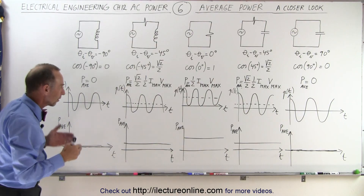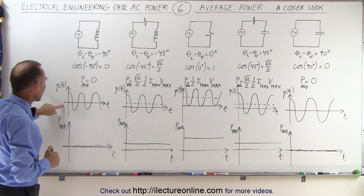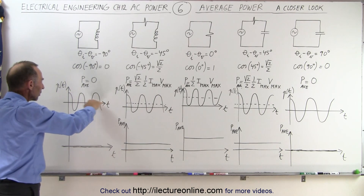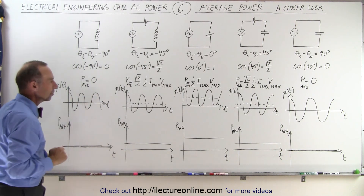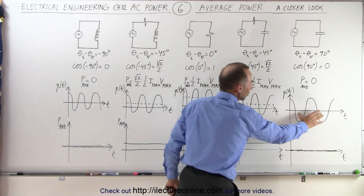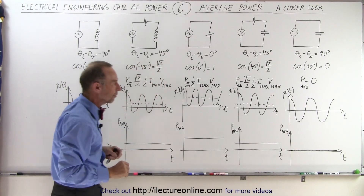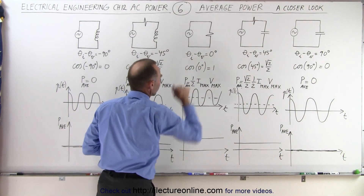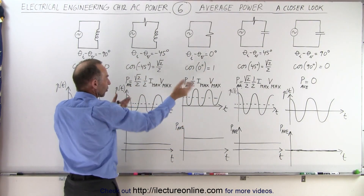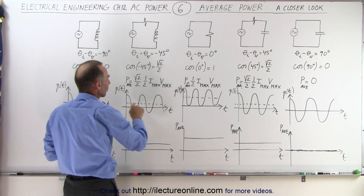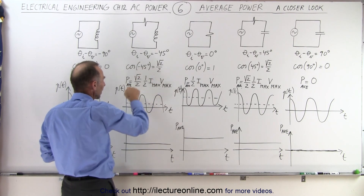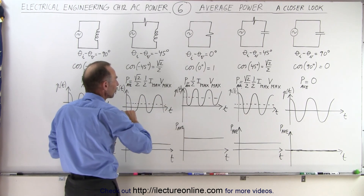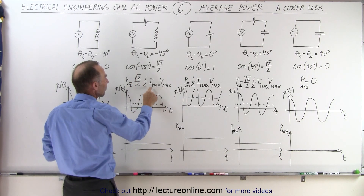Now we have the associated graphs. For the purely inductive and purely capacitive circuits, the average power is zero — the instantaneous power oscillates where the middle of the graph is right on the t-axis, showing no average power consumed by those devices. If we have a resistor in series with the inductor or in series with a capacitor, notice it lifts the curve — the average power increases — and at a 45-degree phase angle the average power about which the instantaneous power oscillates is the square root of 2 over 2 times one-half Imax Vmax.